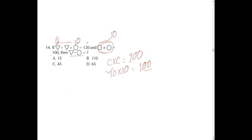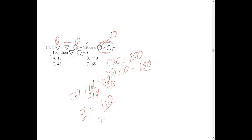So: T + T + 10 = 120. Subtracting 10 from both sides gives 2T = 110, so one triangle equals 55. The question asks for triangle minus circle, which is 55 − 10 = 45. Option C, 45, is the correct answer.